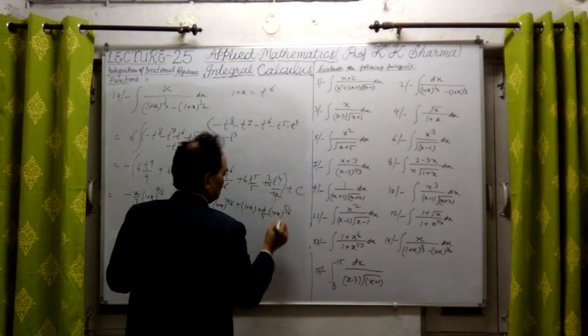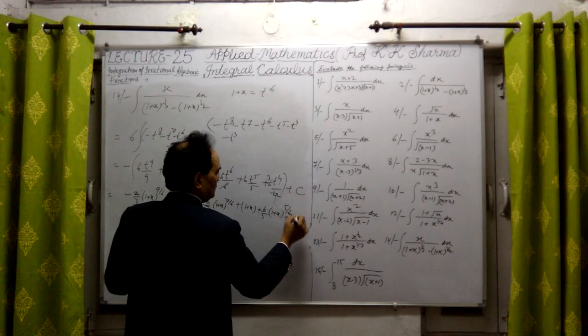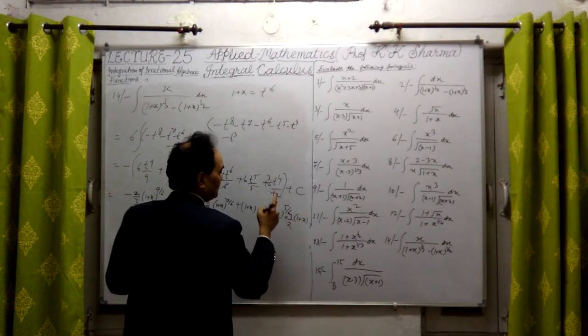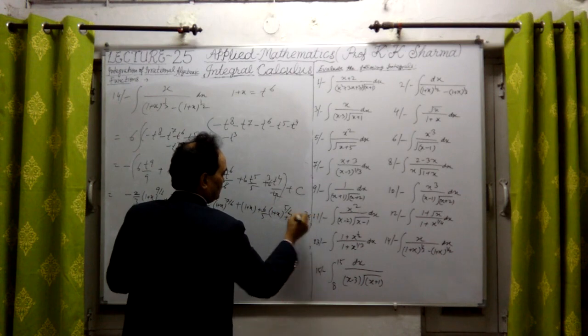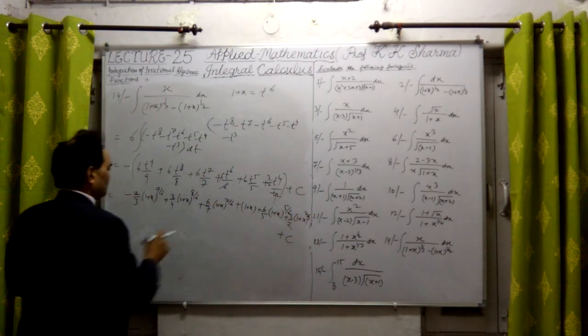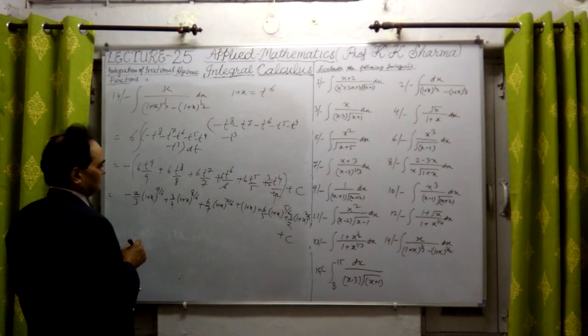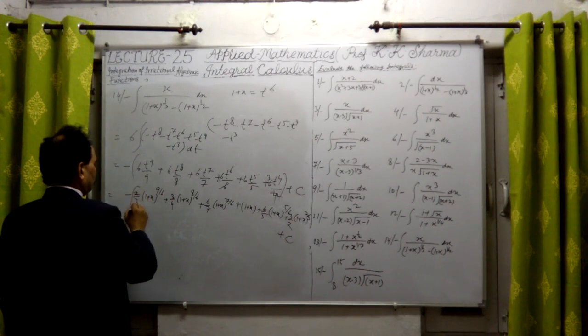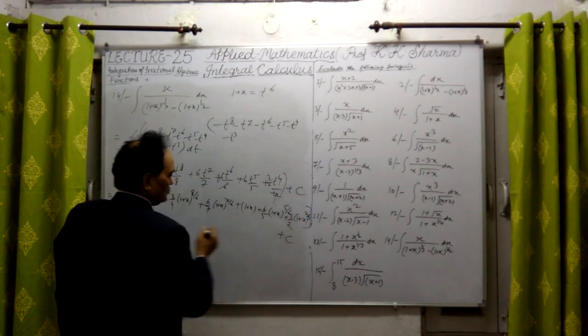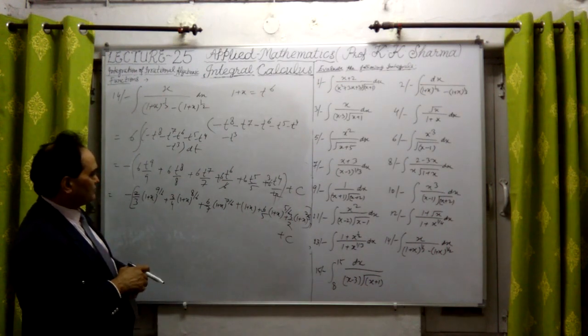But this is 3, 2, plus 3 by 2, 3 by 2. T is 1 plus x, 1 plus x, 4 by 6, that means 2 by 3. Plus constant, this is the final function. The negative sign, okay, this minus sign is with all. Let me write here minus sign out, this is with minus sign whole.